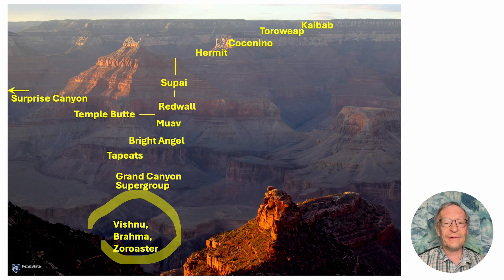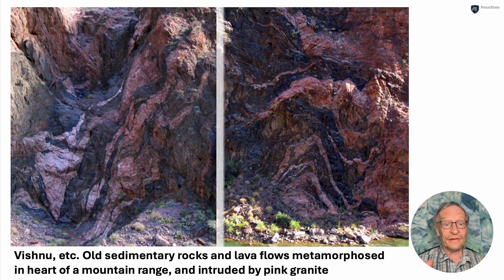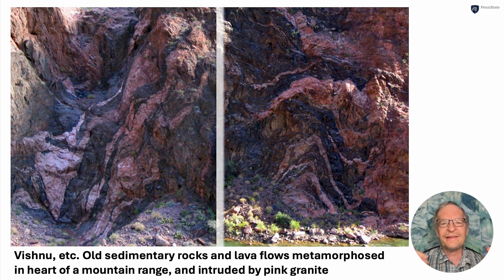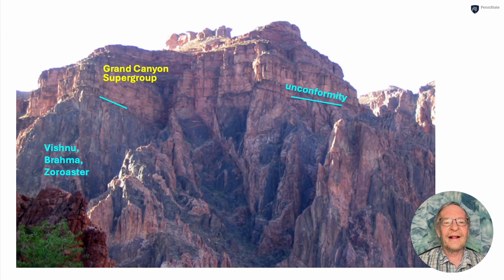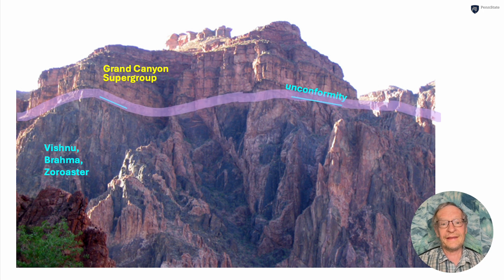We're going to start down here with the Vishnu and Brahma schist and the Zoroaster granite. Here are pictures of them down by the river. They started out as sediments and lava flows and ash that fell out of the air from volcanic eruptions. Then they were squeezed and heated in the heart of a mountain range, metamorphosed, and then squirted pink granites — the Zoroaster granite — into them and folded to make these beautiful things. But then they got all the way back to the surface so that they could be eroded to make the unconformity, the time gap, before deposition of the sediments of the Grand Canyon Supergroup on top.